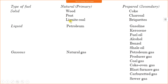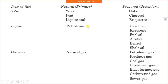Primary fuel means the fuel which is obtained naturally in its original form. Secondary fuels are those which are prepared from primary fuels. For liquid fuels, crude oil is a petroleum fuel obtained from the earth's crust by degradation and fermentation of aquatic animals and plants. Different oils such as gasoline (petrol), kerosene, fuel oil, alcohol, and shale oil are separated from crude oil — these are secondary fuels. Natural gas is a primary gaseous fuel, and from it we separate different gases such as petroleum gas, producer gas, coal gas, blast furnace gas, carbureted gas, and sewer gas.